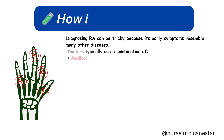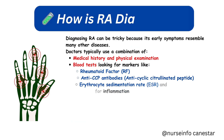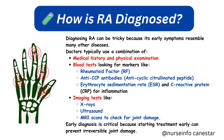How is RA diagnosed? Diagnosing RA can be tricky because its early symptoms resemble many other diseases. Doctors typically use a combination of medical history and physical examination, along with blood tests looking for markers like Rheumatoid factor (RF) and anti-CCP antibodies.